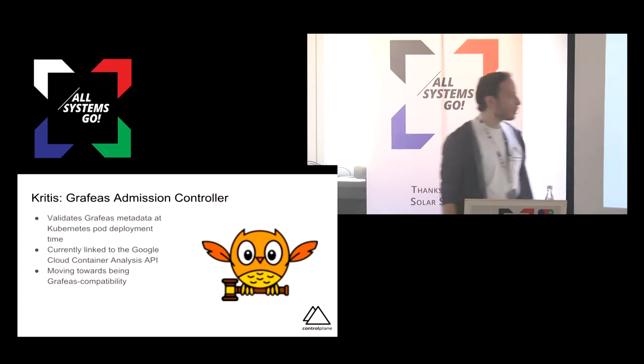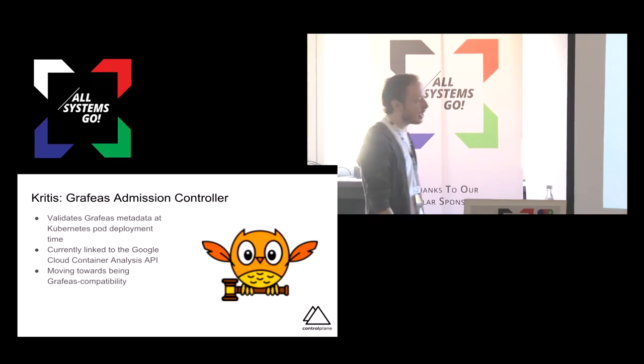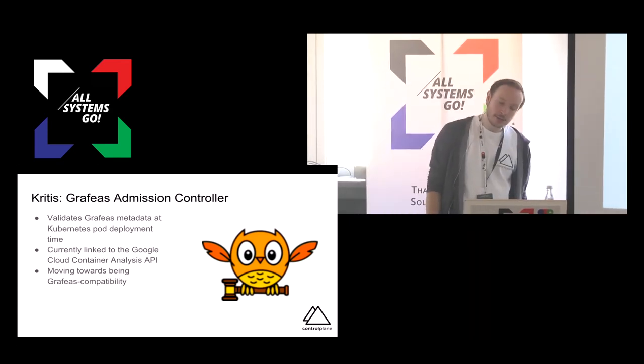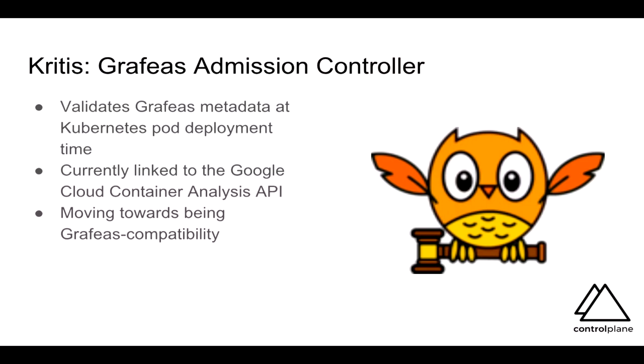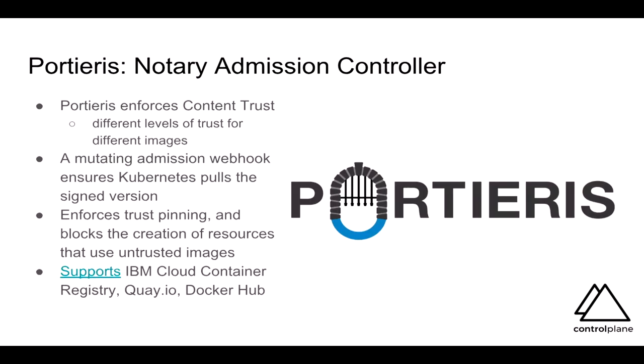Kritis is the admission controller for Grafeas. It still only works with Google's internal metadata API right now, but it is rapidly being open-sourced. And Portieris is from some of the guys at IBM, which is an admission controller for Notary. It only supports a small subset of registries currently, but the PR for using private registries landed last week, so it is rapidly gaining maturity.